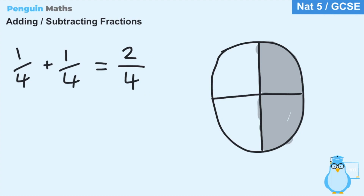We know two over four can also be simplified to one over two, because two and four can both be divided by two, simplifying the fraction to a half. And we know that two quarters is equal to a half because we can see these two slices represent half of the pizza.